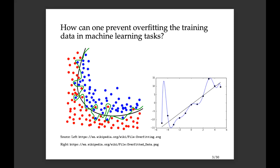A more classical example on the right: we have points and we could fit a polynomial perfectly with no mismatch between the function and the points. But this is really complicated and probably not a good explanation of the relationship between the two variables. We might instead choose to fit a line — something simpler.